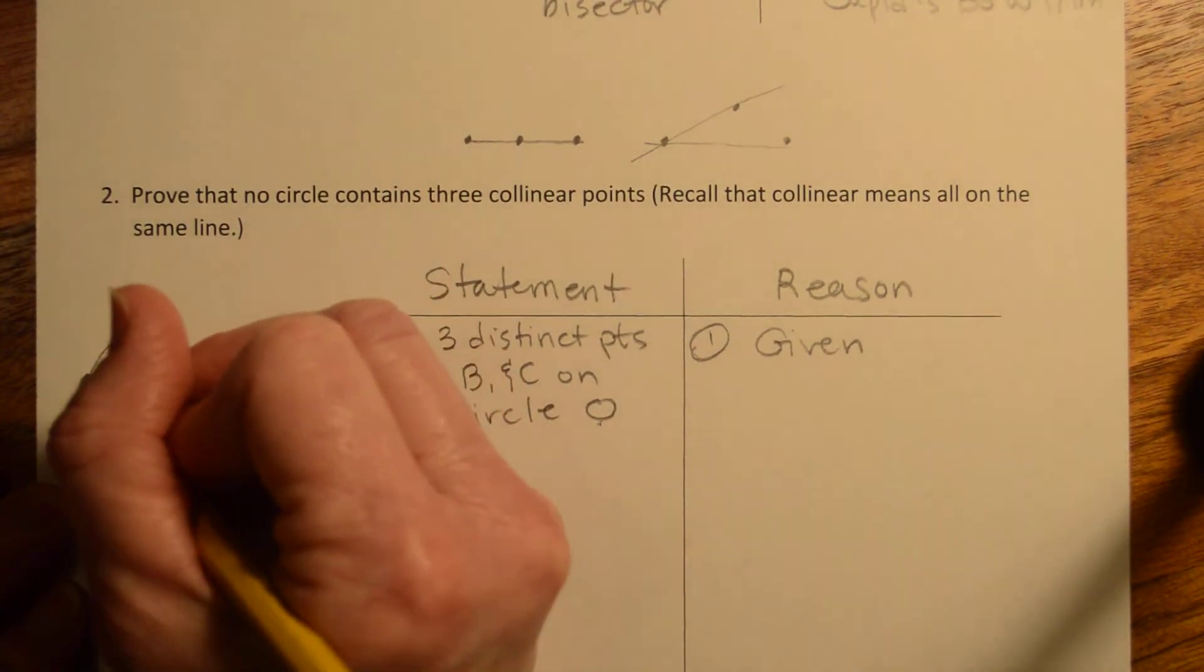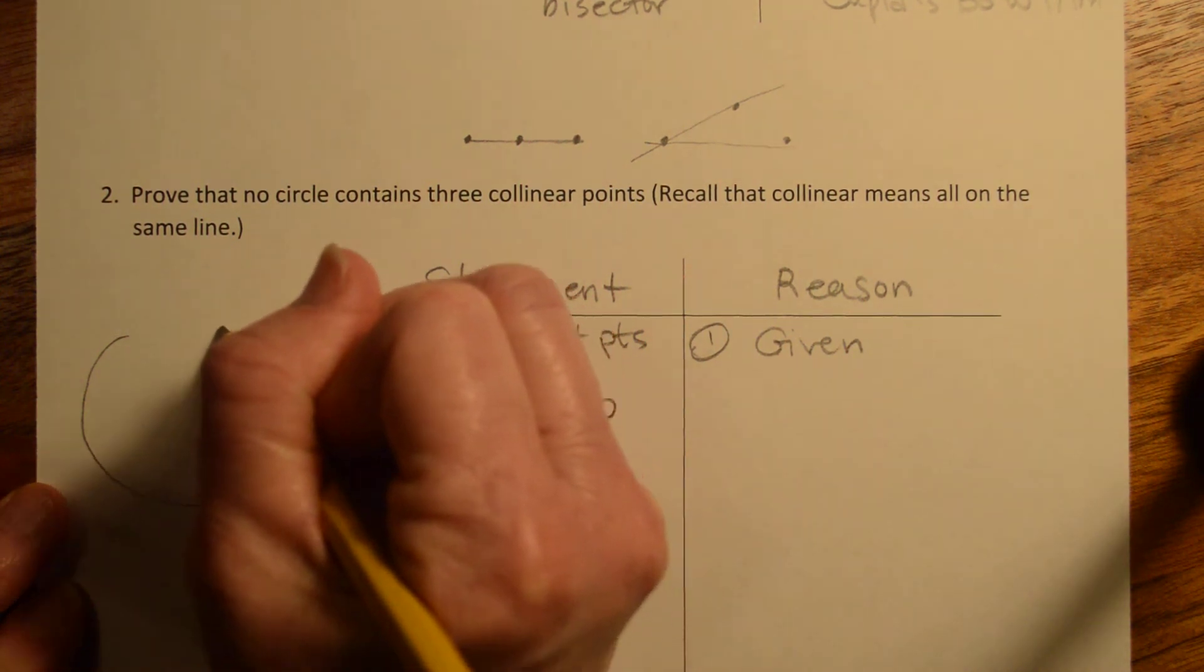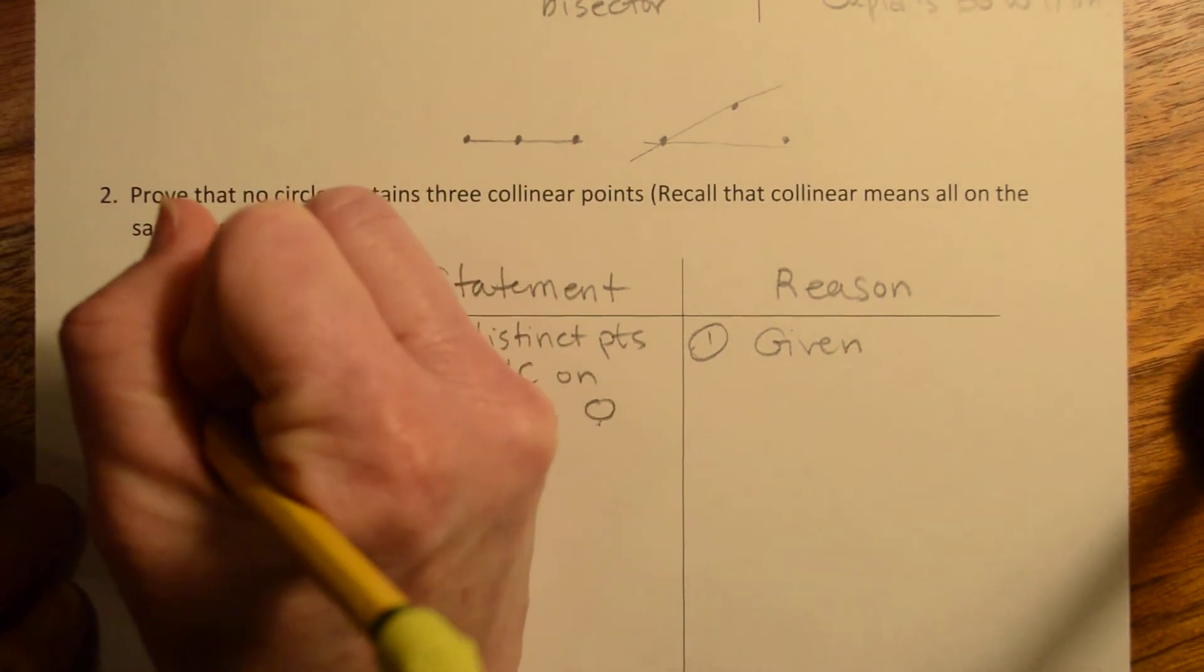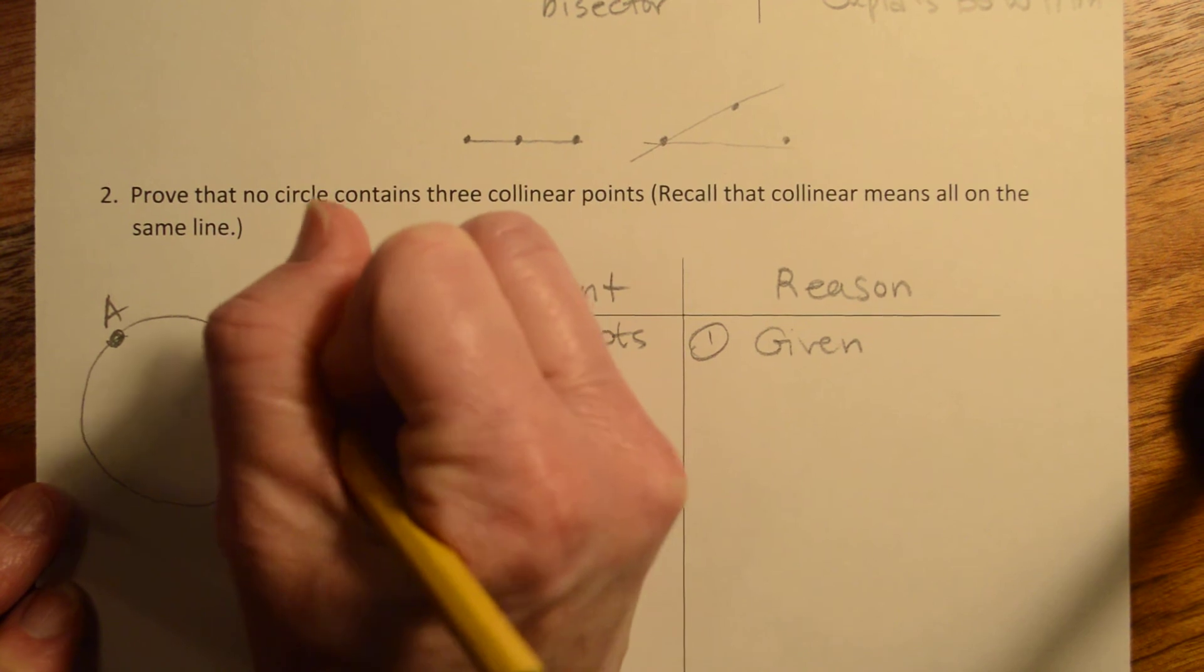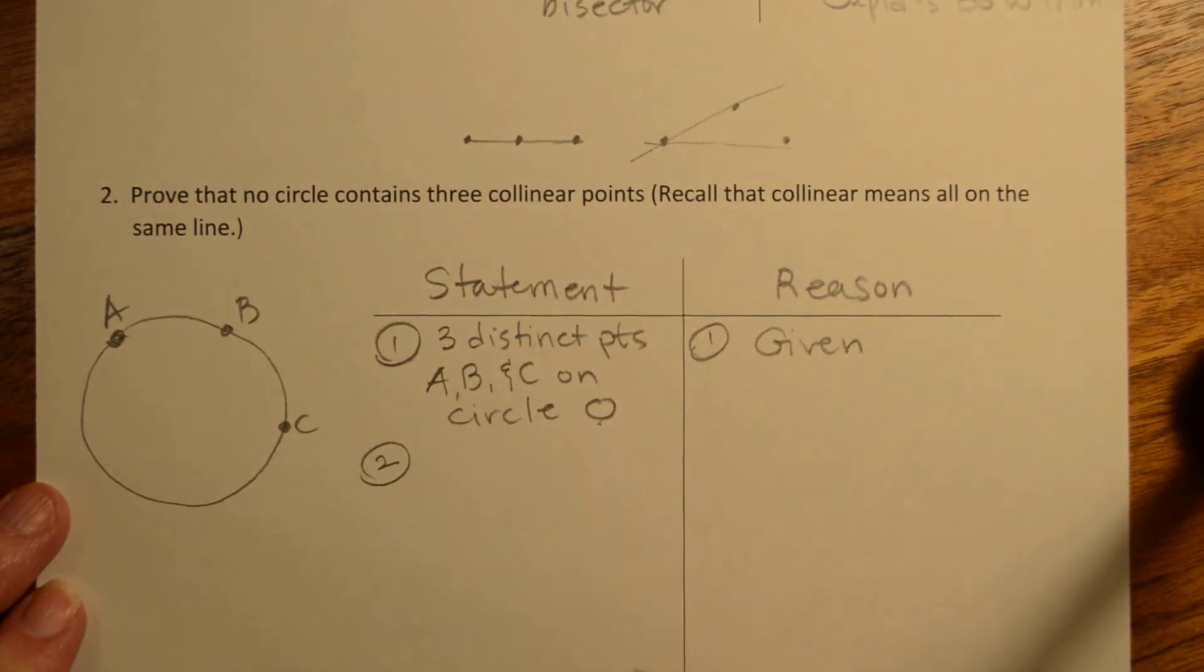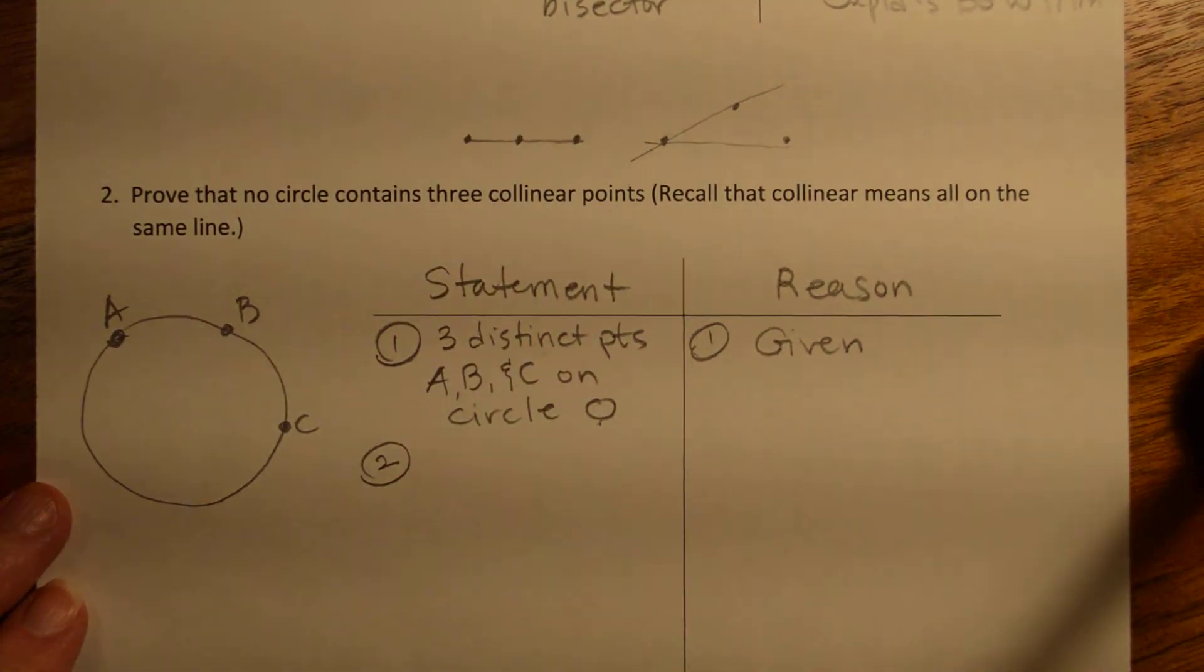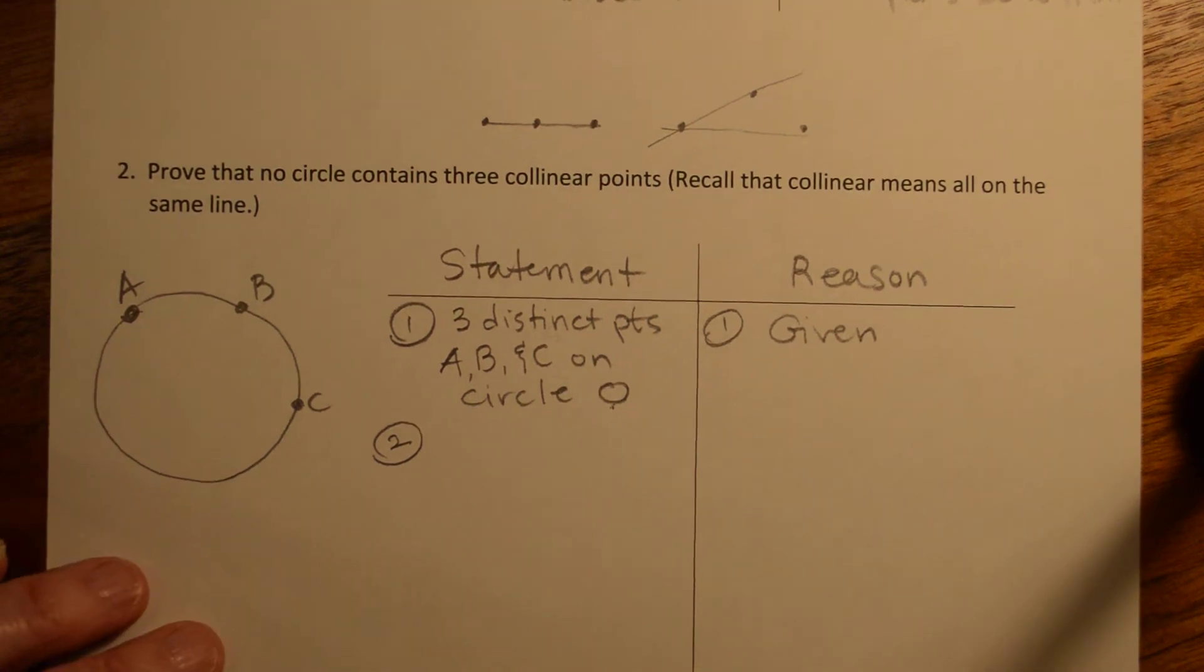Okay, now we have three points that lie on a circle. So let's say that we've got A, B, and C that lie on the circle. We're trying to prove that these, that we cannot have them be collinear.